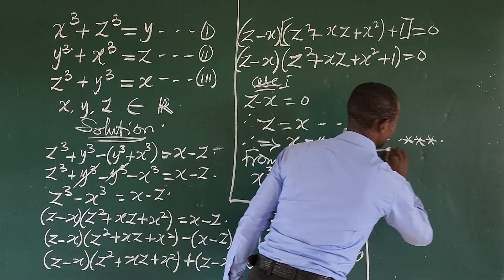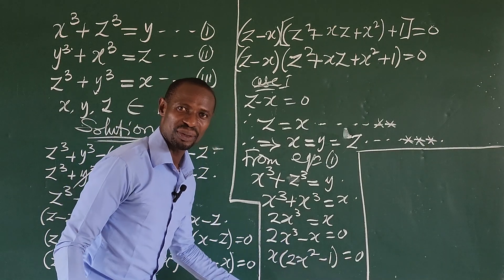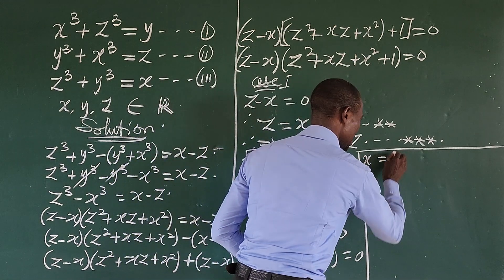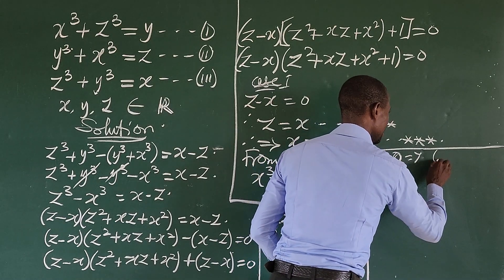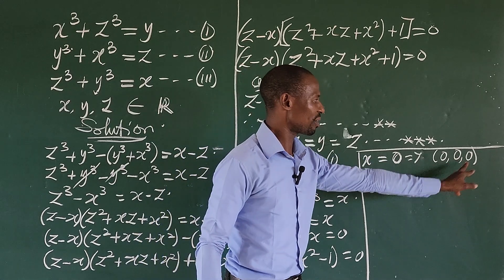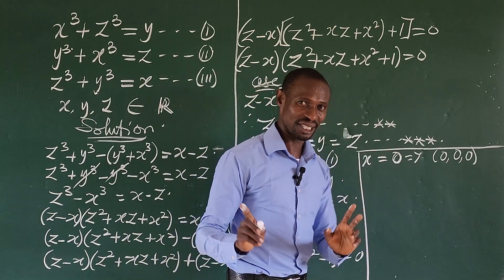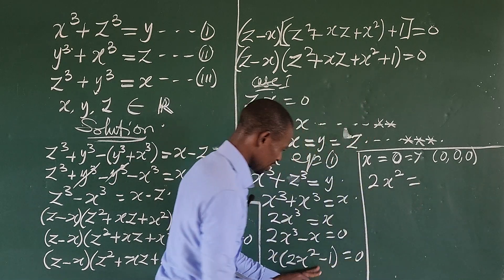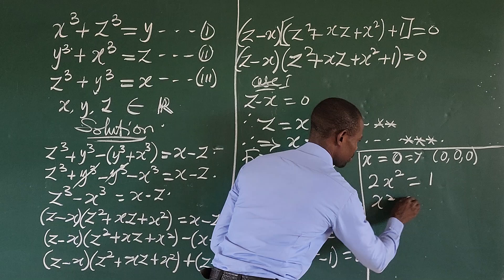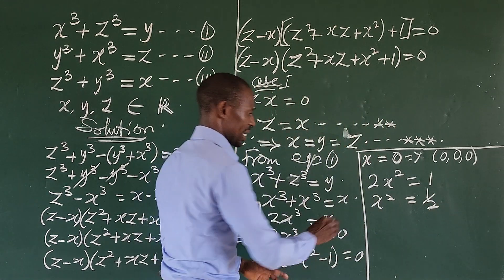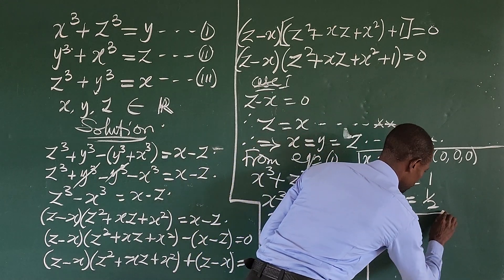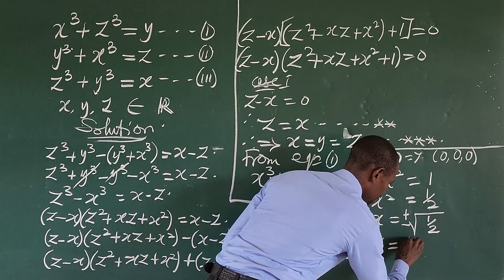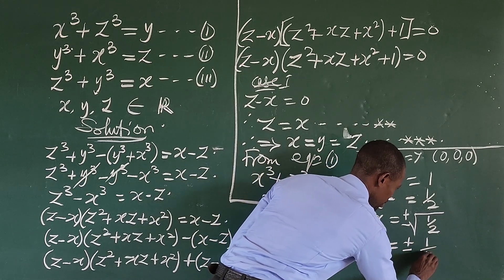Applying the zero product rule, either x = 0 or 2x² − 1 = 0. For case two: 2x² = 1, so x² = 1/2, giving x = ±1/√2, which can also be written as ±√2/2. So we have three possible values for x: 0, +1/√2, and −1/√2.